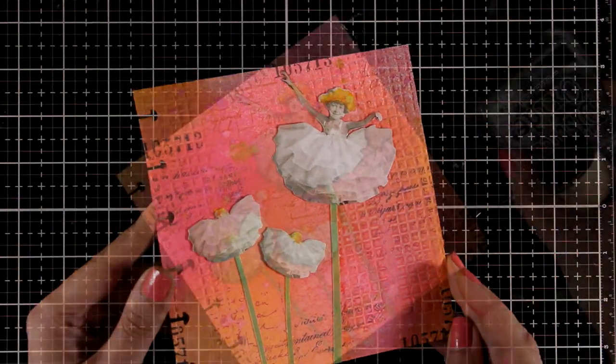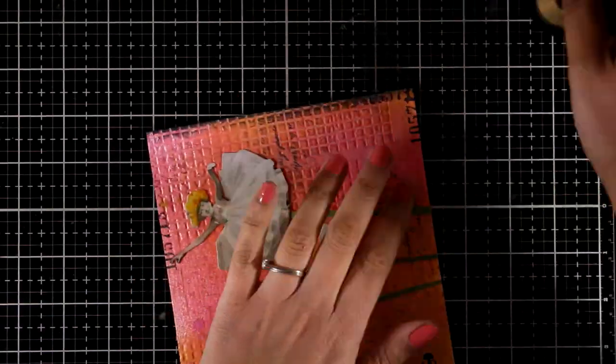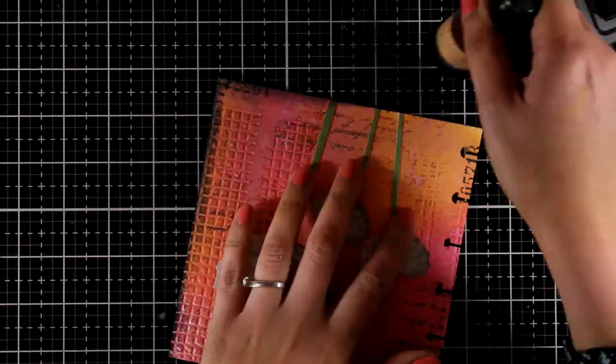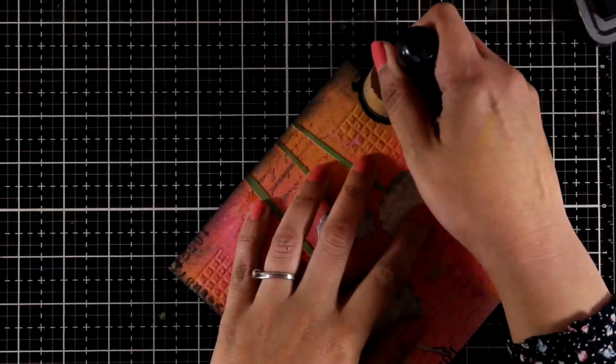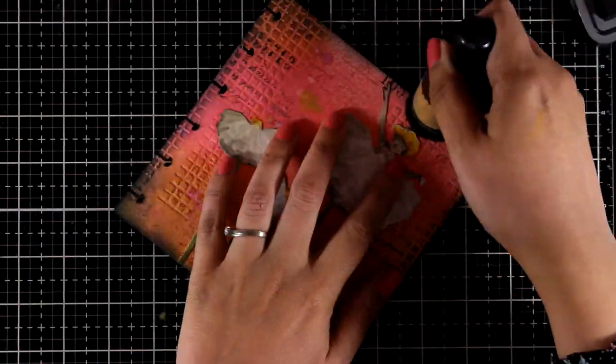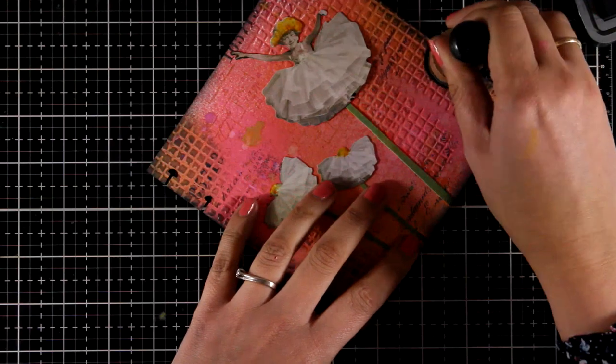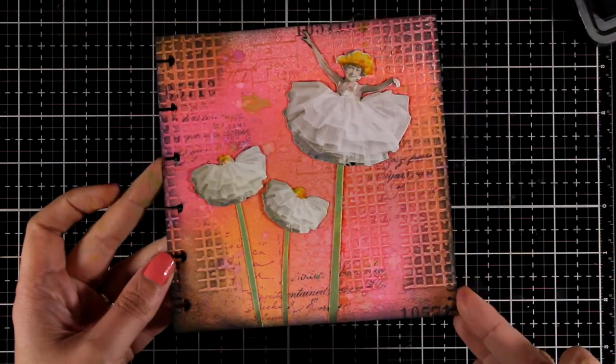At this stage I'm pretty much done with my page. I'm going to add some Black Soot Distress Oxide ink with my blending tool around the edges. I always like to frame my art journal somehow. I think that it helps the colors at the center of my page pop even more.